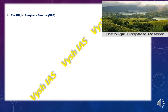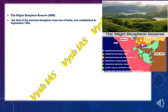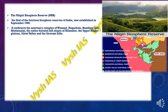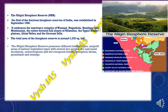The Nilgiri Biosphere Reserve is the first of the 14 biosphere reserves in India, established in 1986. It has a sanctuary complex of Wayanad, Nagarhole, Bandipur, Mudumalai, and the entire forested hill slopes of Nilambur, the upper Nilgiri Plateau, Silent Valley and the Siruvani Hills. The total area of the biosphere reserve is around 5520 square kilometers.